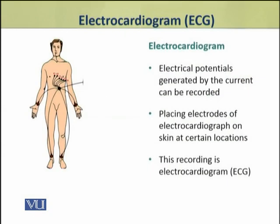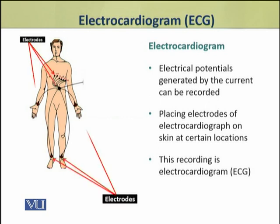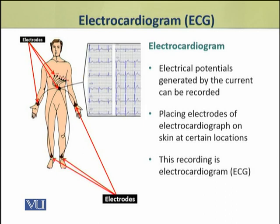The electrical potentials generated by the current can be recorded by placing electrodes of an instrument — the electrocardiograph — on the skin at certain locations. As a result, the electrical changes in the heart can be recorded, and these recordings are known as the electrocardiogram.